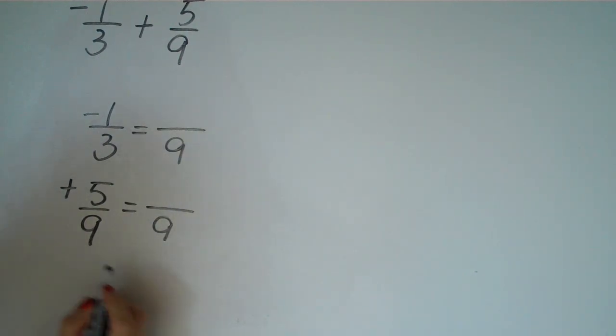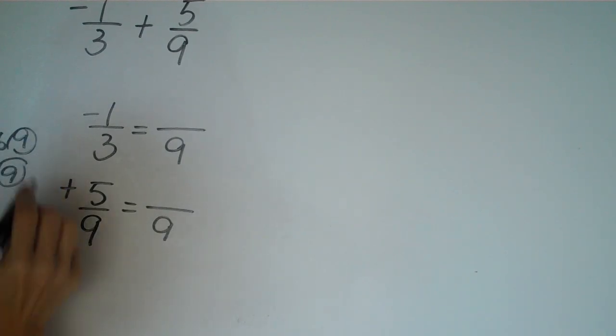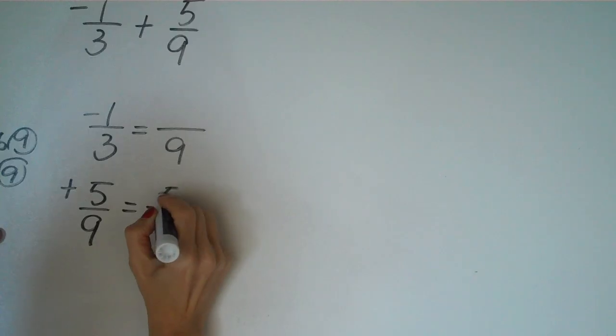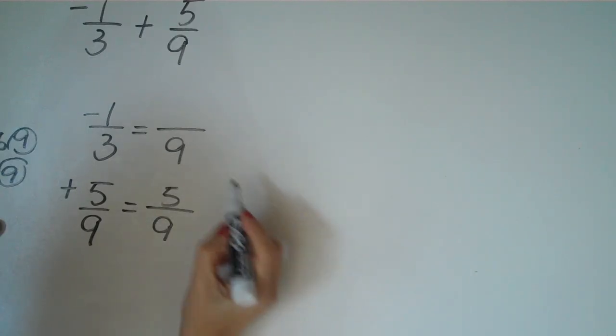And again, if we were to write this out, we would have 3, 6, 9 as the multiples, and then 9 as the multiples of 9. And you just circle that. Most people can just do this in their head at this point. So 5 ninths is equal to 5 ninths. We don't have to do anything there.